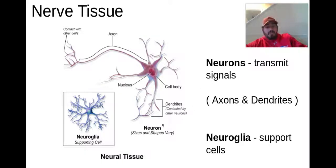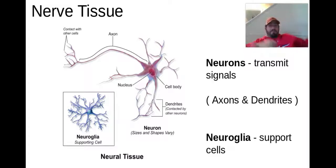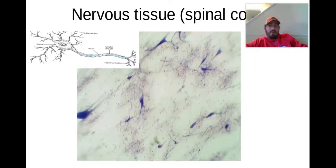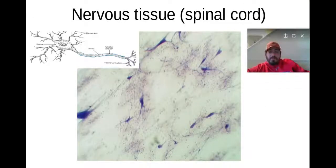Neurons can vary in shape and size — you can have some neurons that are super, super long, like feet long in a giraffe, and you can have really tiny ones as well. Here's a picture from a spinal cord cross section where you can see some of these.